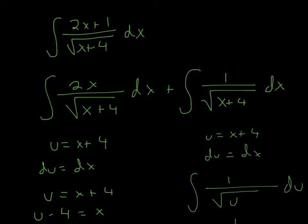If it was multiplication, you can't split it, but since it's addition, we can split it into two different integrals. Now we can do u-substitution. We'll set the denominator — we say that u is equal to x plus 4. Then we take the derivative because we need du, so du is equal to dx.